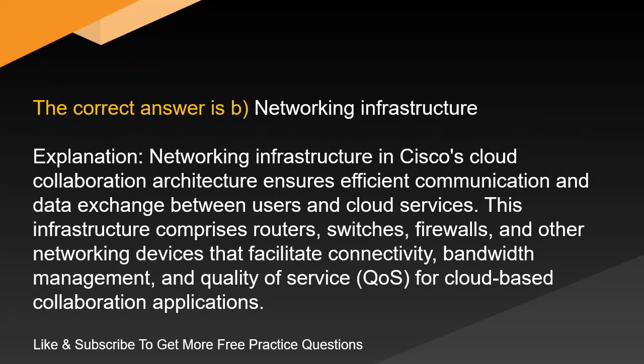The correct answer is B. Networking Infrastructure. Networking infrastructure in Cisco's cloud collaboration architecture ensures efficient communication and data exchange between users and cloud services. This infrastructure comprises routers, switches, firewalls, and other networking devices that facilitate connectivity, bandwidth management, and quality of service (QoS) for cloud-based collaboration applications.